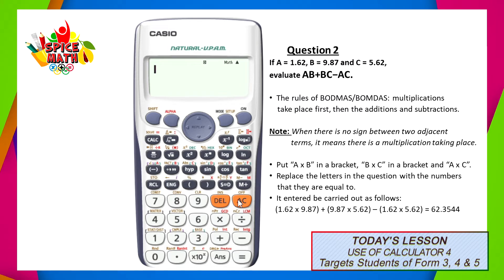The first step in solving such a question would be to identify how you would enter such a set of operations into the calculator. In this question, the rules of BODMAS stipulate that the multiplications take place first, followed by the additions and subtractions. Also, I want you to note that when there is no sign between two adjacent terms, it implies that there is a multiplication taking place. To enter this, we would have to put A times B in a bracket in the place of AB, plus B times C in a bracket in the place of BC, minus A times C in a bracket in the place of AC. In order to actually evaluate this question, we must substitute the numbers in for the letters, meaning that we must swap all the letters for the numbers which they are equal to.